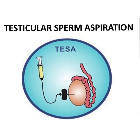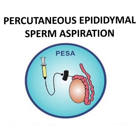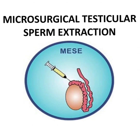Testicular sperm aspiration (TESA): a fine needle is inserted into the seminiferous tubules of the testis and semen are aspirated into a syringe with diluent. Percutaneous epididymal sperm aspiration (PESA): a fine needle along with a diluent syringe is inserted directly into the epididymis and stored sperms are aspirated. Microsurgical epididymal sperm extraction (MESE): a small incision is made in the scrotum and sperms stored in the epididymis are directly extracted through a syringe.